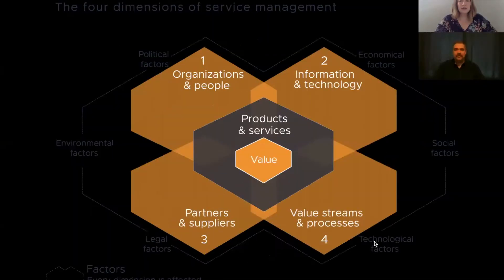The four dimensions are: organizations and people, information and technology, partners and suppliers, and value streams and processes. The first dimension, organizations and people, deals primarily with governance, management, culture, and the people that make up all of that — skill sets and workforce. The second dimension, information and technology, deals primarily with all of our knowledge, whether tacit or explicit.